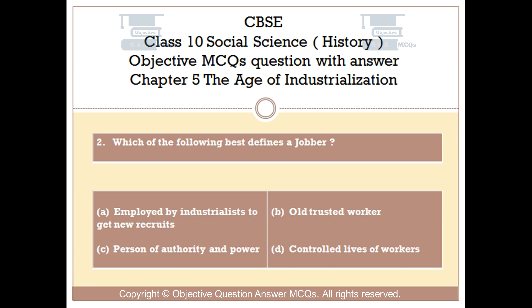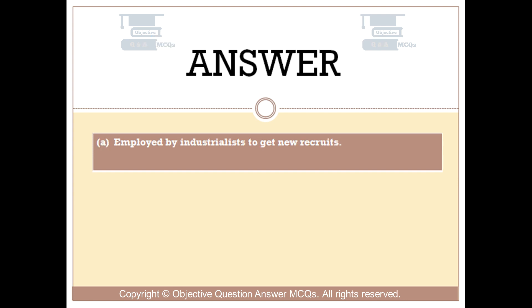Question number 2. Which of the following best defines a jobber? Option A, employed by industrialists to get new recruits; Option B, old trusted worker; Option C, person of authority and power; Option D, controlled lives of workers. The right answer is Option A: Employed by industrialists to get new recruits.